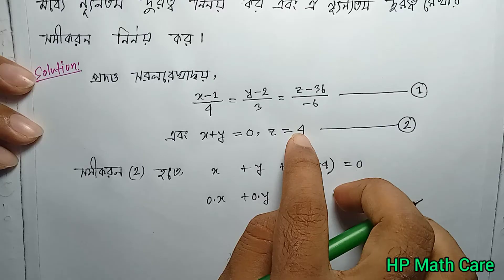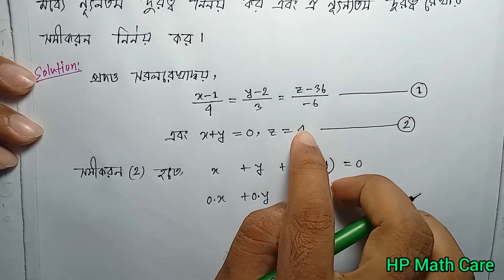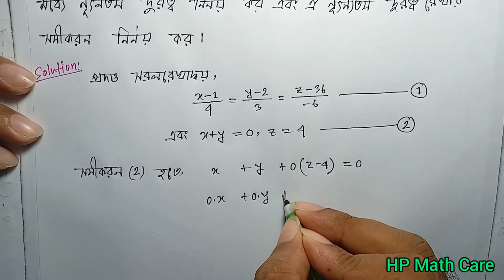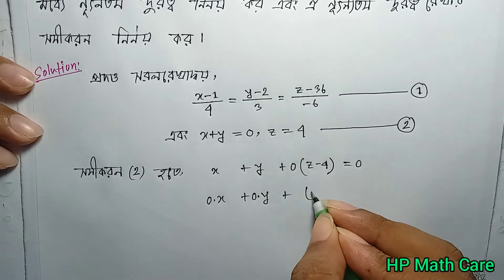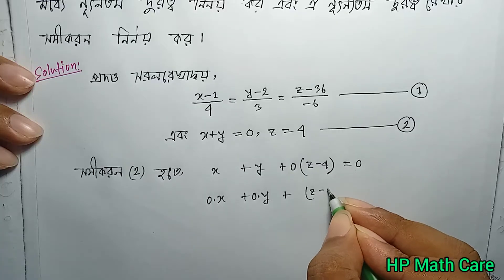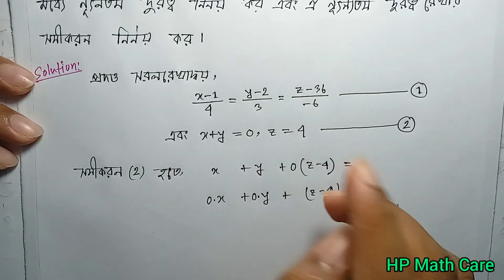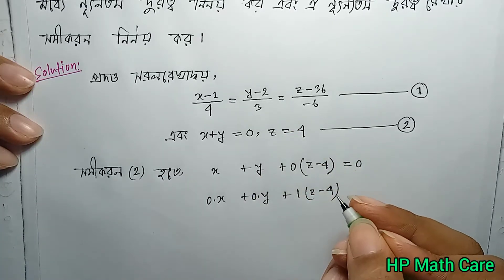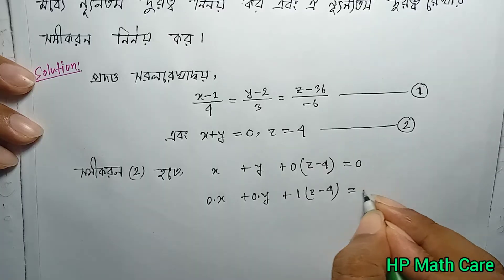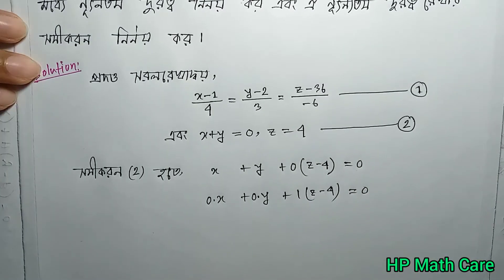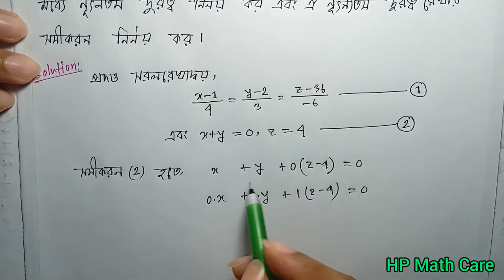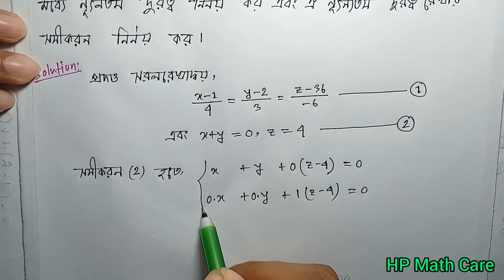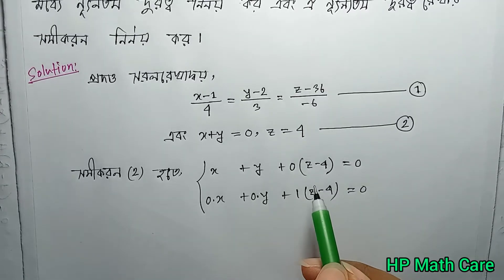We have to get z equal to 4. If we need the number, then we have to get z minus 4. If we get z minus 4, then we have to get z equal to 0. So, we have to get the value of 2.